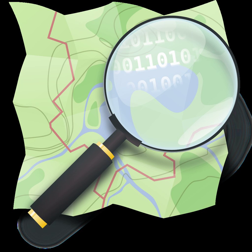Chief amongst these were Foursquare, Craigslist who adopted OpenStreetMap, and Apple, which ended a contract with Google and launched a self-built mapping platform which uses TomTom and OpenStreetMap data.